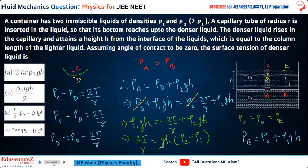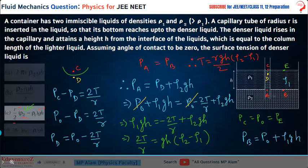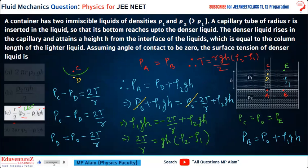Rearranging to isolate surface tension: 2T/R equals g × H × (rho 2 minus rho 1). Taking R to the other side and dividing by 2, we get T equals R × g × H × (Rho 2 minus Rho 1) divided by 2. So option C is correct. That's how we solve this question. Thank you so much for watching.